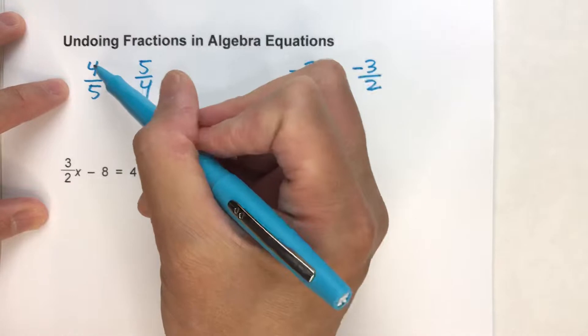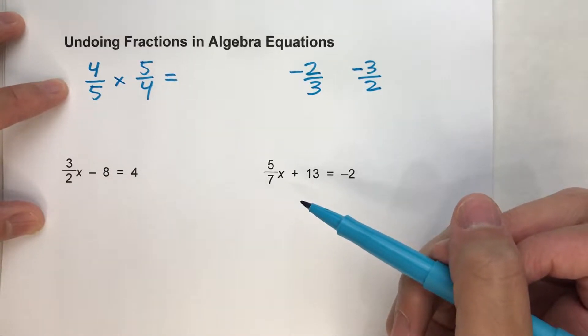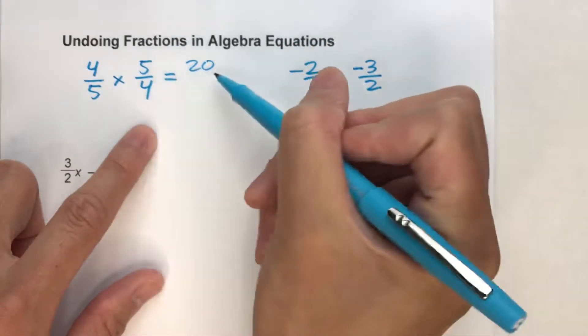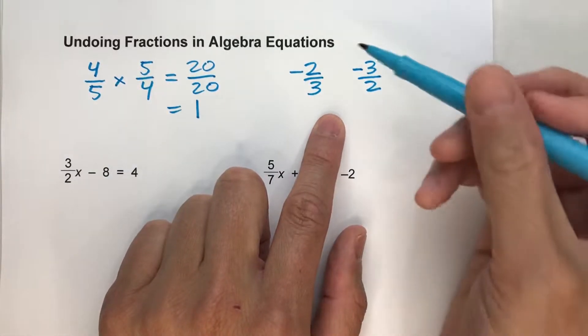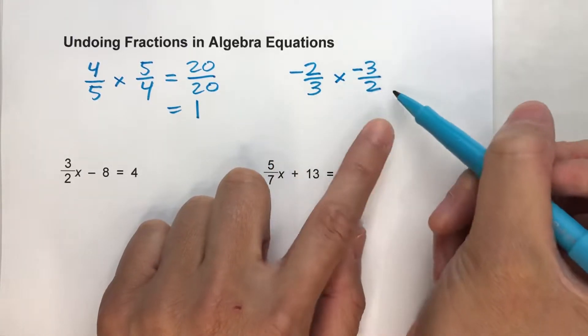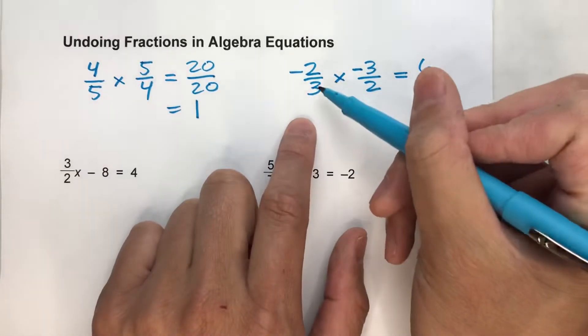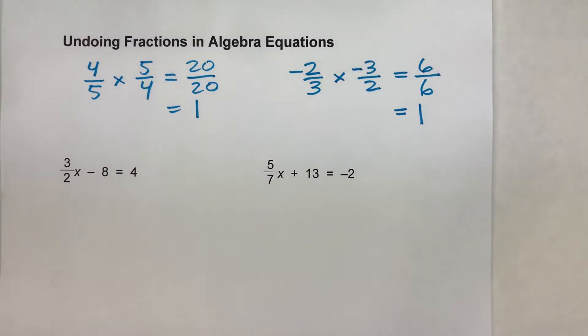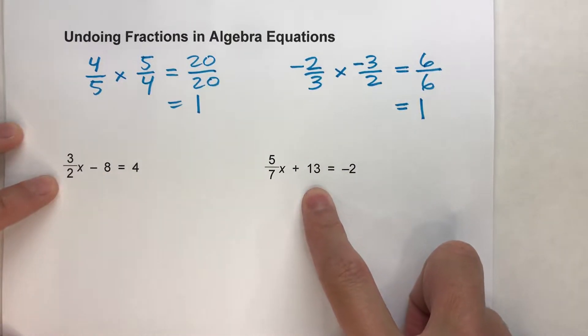Now why this is important is because when you take any fraction and multiply it times its reciprocal, you always get 1. I'll show you what I mean. 4 fifths times 5 fourths. 4 times 5 is 20. 5 times 4 is 20 for the bottom. And 20 over 20 simplifies to one whole. Similarly, look over here. Negative 2 thirds times negative 3 over 2. If I multiply this fraction by its reciprocal, a negative times a negative is a positive. 2 times 3 is 6. And 3 times 2 is 6 for the bottom. And 6 over 6 simplifies to one whole. And this works for any fraction. You take any fraction and multiply it by its reciprocal, you'll always get one whole. Now we can use this fact to undo the fraction in an equation.